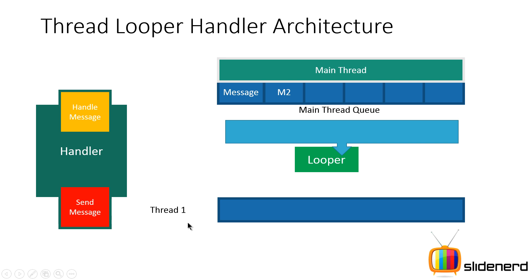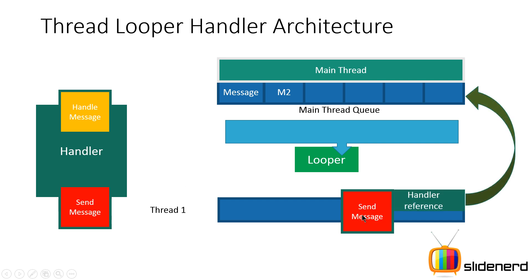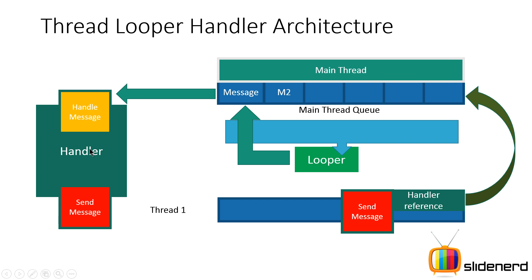Let's take a look at how this works. Say Thread One wants to send a message to the main thread indicating to update the progress bar. From Thread One you get the Handler's reference and call send message on the Handler, and that message goes inside the message queue. The Looper runs one message at a time, and ultimately when it comes to your message, the Looper opens it up and forwards it to the Handler. The Handler object then has the method handleMessage, inside which your code is executed on the main thread.